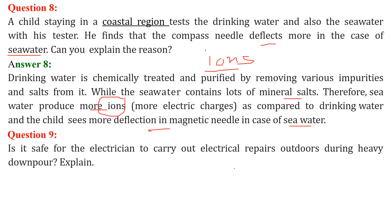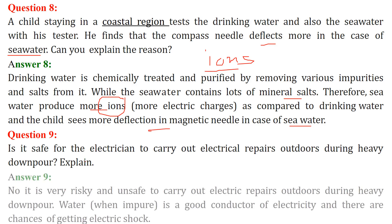Is it safe for the electrician to carry out electrical repairs outdoors during heavy downpour? Explain. The answer is no. It's very risky and unsafe to carry out any electrical repairs outdoors during heavy downpour. Why? Because water, when impure, is a good conductor of electricity and there are chances of getting electric shock.